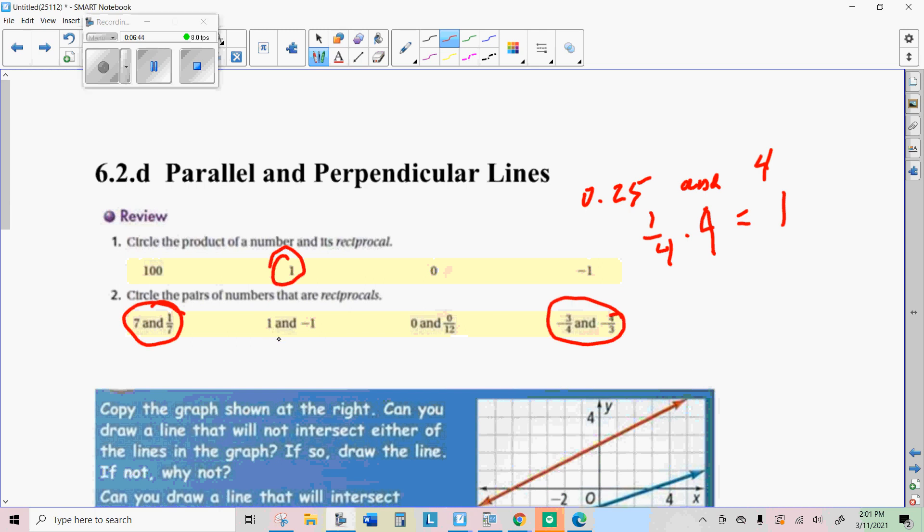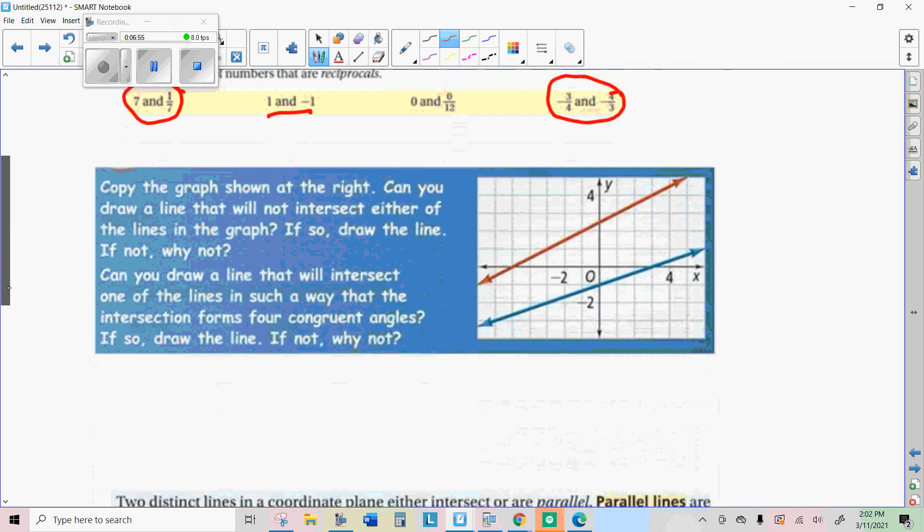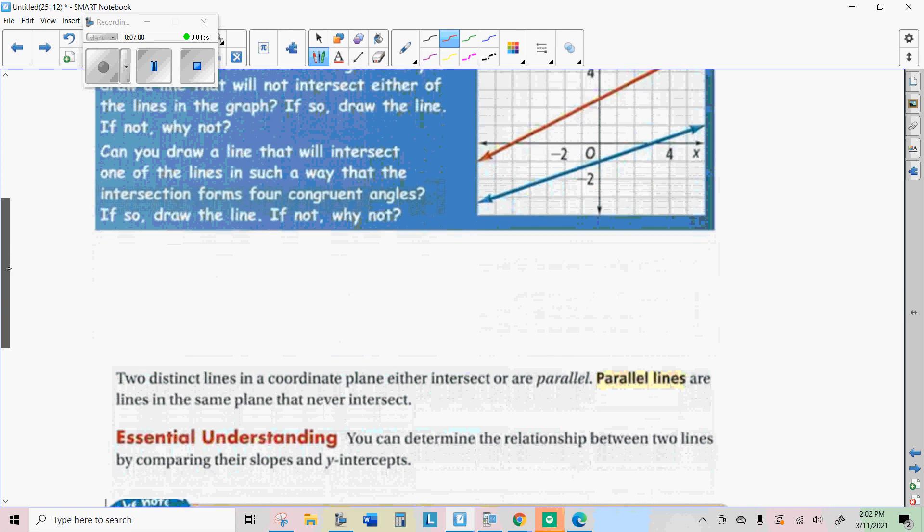If you multiply these two, you get negative one, so they're not reciprocals, they're actually opposite reciprocals. Zero doesn't have a reciprocal, because when you multiply zero times anything, you get zero. You couldn't get one.